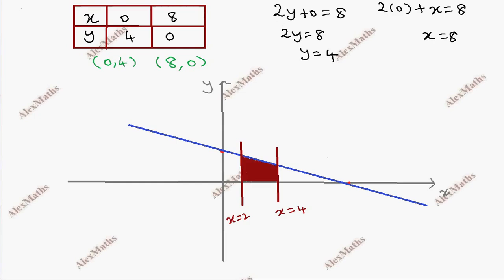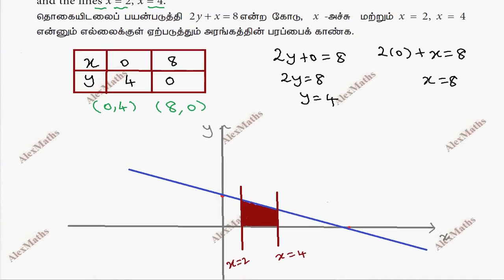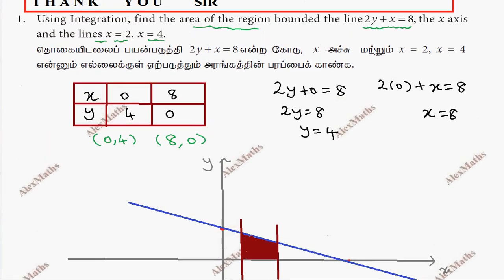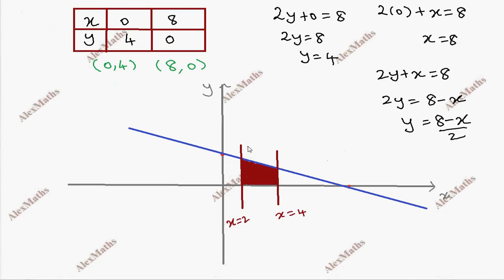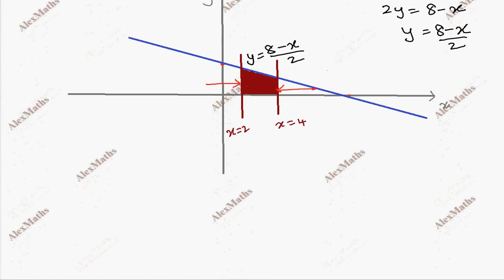Now in the shaded region, we have the curve 2y plus x equal to 8. So 2y equal to 8 minus x, y equal to 8 minus x by 2. So this is what we need. So y is equal to 8 minus x by 2, with limits from 2 to 4, the extreme left and extreme right. We have the formula.